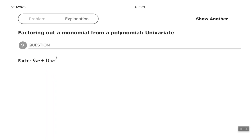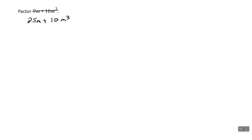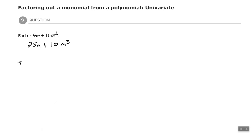Alright, let's look at one more. We have — let's change it up a little bit — 25m + 10m³. Looking at the numbers, 25 and 10: we want to find the largest number that goes into both, which is 5. They both have m's, but the most they have in common is m to the first power. So my greatest common factor is 5m.